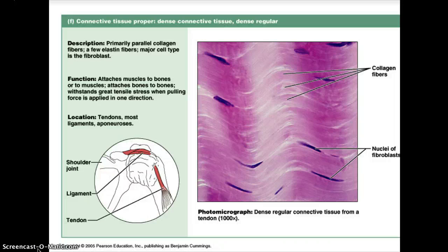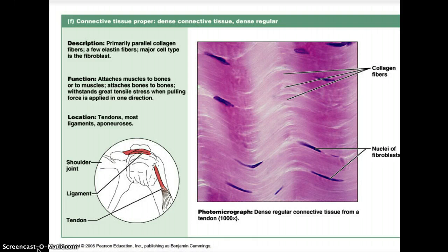Continuing our lecture on connective tissue, our last tissue discussed was dense connective tissue. Dense irregular connective tissue has bundles of non-parallel collagen fibers, with fibroblast cells, found in the dermis of skin, joints, and joint capsules. Dense regular connective tissue has bundles of parallel collagen fibers, also with fibroblasts, and makes up tendons and most ligaments.